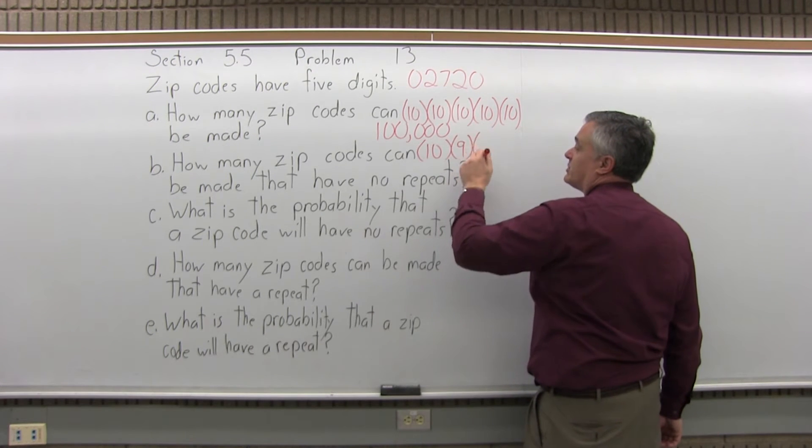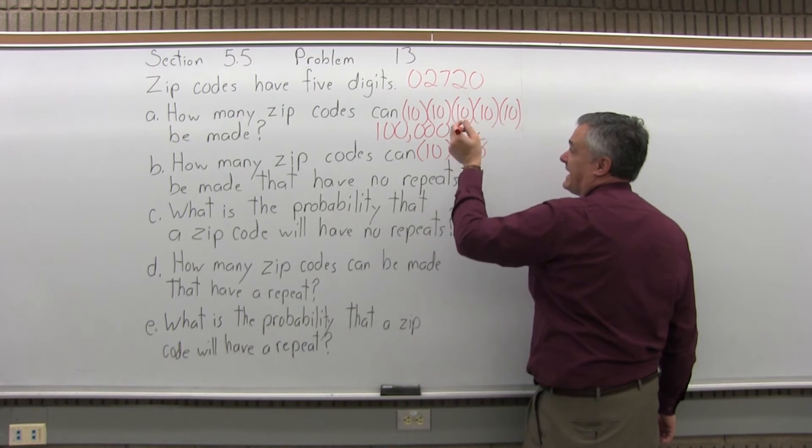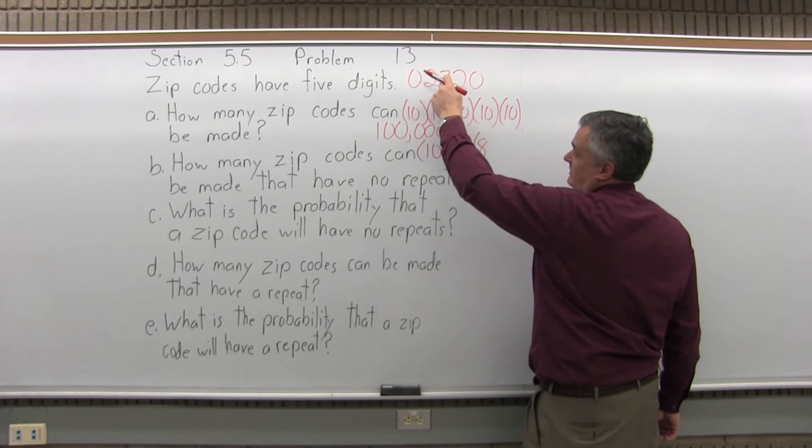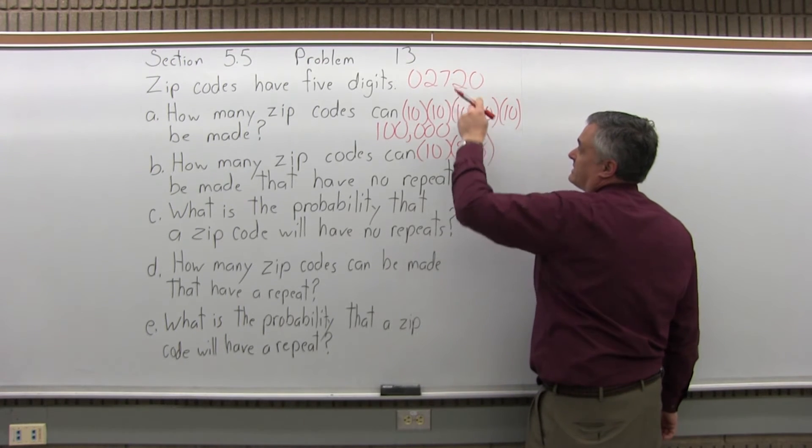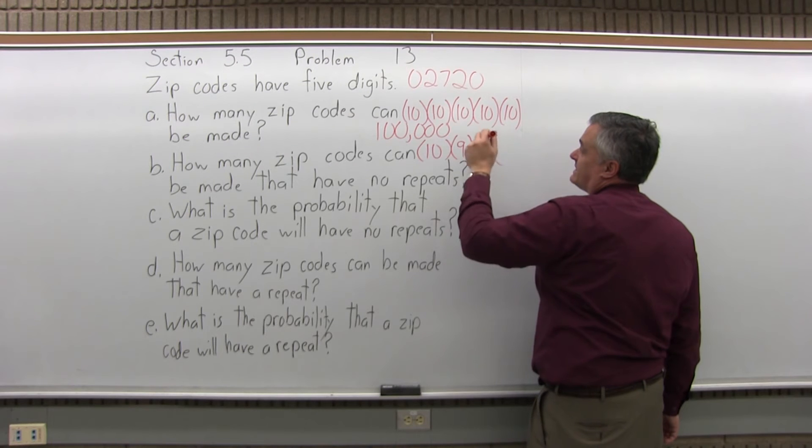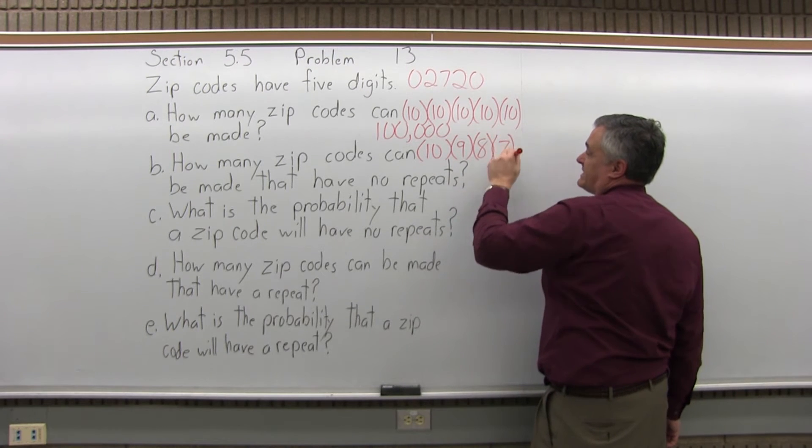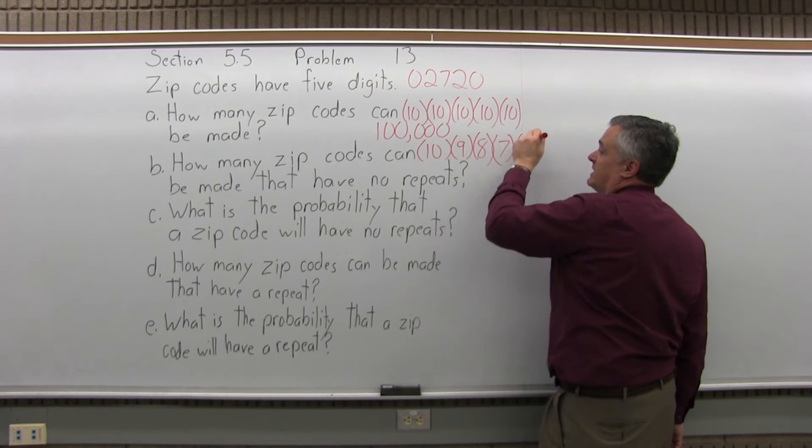And if you would start with zero, two, how many choices for the third digit? You'd be down to eight. Because if you use seven, you can't use it again. So now, when you're down to the next digit, you'd be down to seven choices. And then the last one, the fifth digit, you'd be down to six if you're not going to have any repeats.